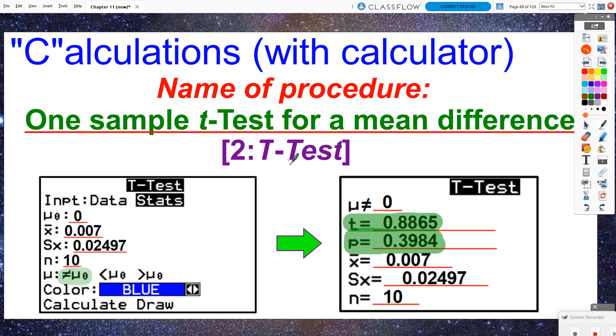We still get to use option number two, a t-test. And I have data and I have statistics, so I could decide which one to do. Selecting data would be much faster to do because you just tell it use list one and have the frequency just be one. And then you can select your alternate hypothesis and do calculate and you're good to move on.